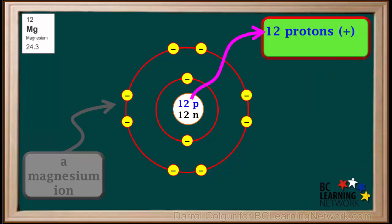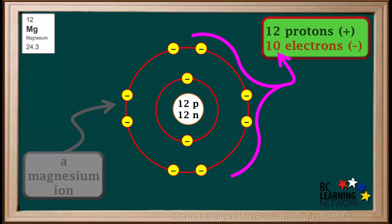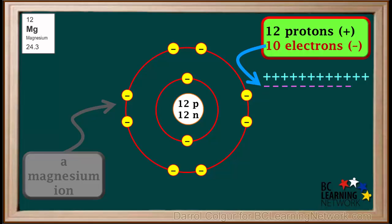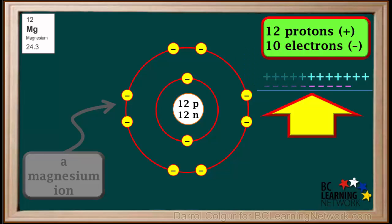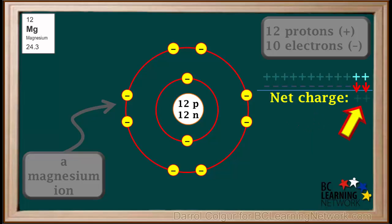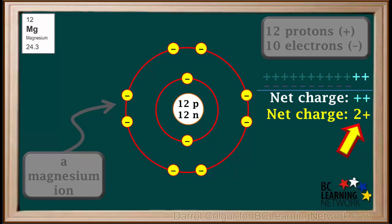This ion has 12 protons but only has 2 plus 8, or 10 electrons. 12 protons means the ion has 12 positive charges, and 10 electrons means it has 10 negative charges. Negative and positive charges neutralize each other, and what's left over is called the net charge, which is 2 positive charges in this case. We can also state this by saying the charge on this ion is positive 2, which can also be written as 2 plus.